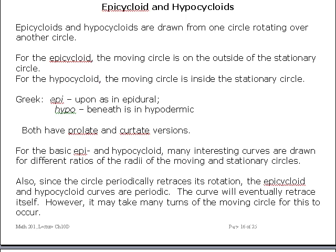And since the moving circle is going around and around the stationary circle, the curves that are traced, the epi and hypocycloid, are also periodic curves. And they end up generating a pattern depending on how many cycles of the moving circle it takes before it starts repeating.